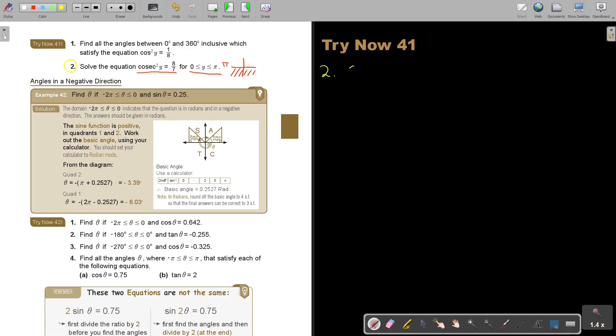Now I say cosec²y is equal to 8 over 7. Now let's first do the swap. Third letter, so it's sin²y. I still sit with the square, but it's 7 over 8. I swap it around. And now I have sin y equals plus minus the square root of 7 over 8.